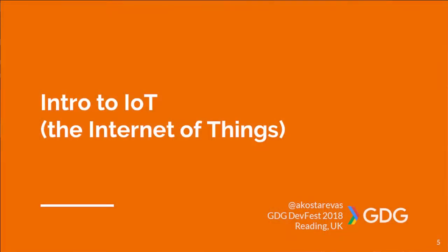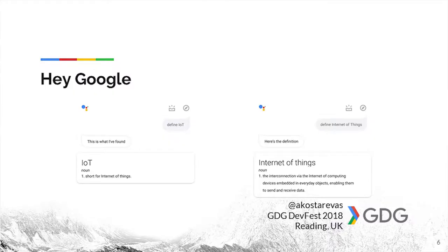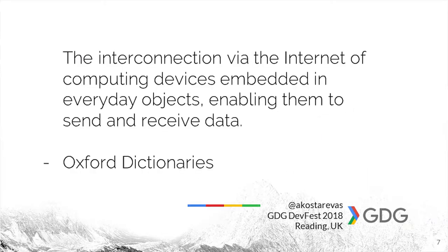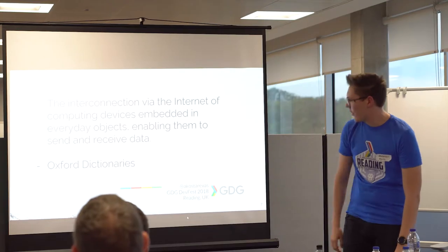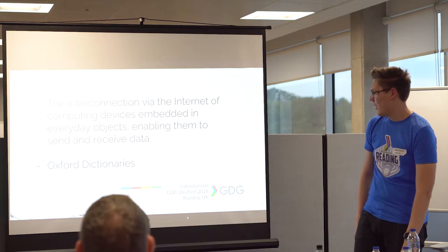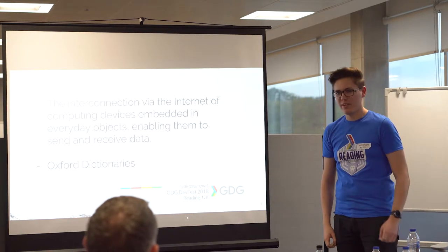So what is the Internet of Things? The easiest way to find out is to ask Google. It's the interconnection via the Internet of computing devices embedded in everyday objects, enabling them to send and receive data. That's the Oxford Dictionary's definition, and that's what we're going to be dissecting today.